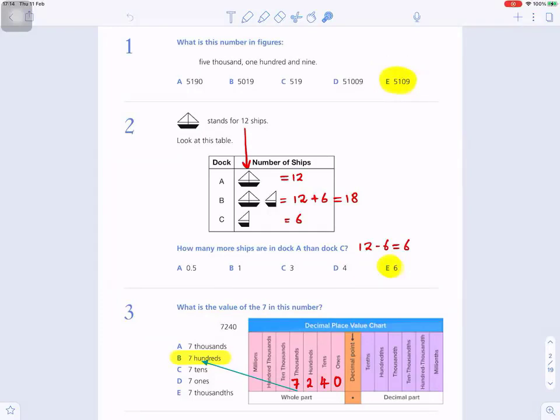And I will show you how you would map that on the answer grid. For question number two, this symbol, which represents the key, stands for 12 ships. Look at this table. We have the dock, which is where you keep ships. So A, B, and C, that's where you keep a number of ships.